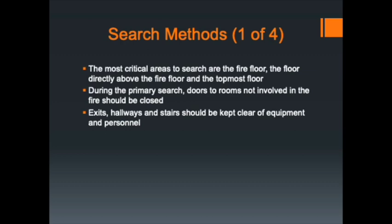Be concerned about auto exposure if working on the floor above the fire. Auto exposure is when fire on the second floor extends out a window, travels up the side of the building, and re-enters through a third floor window. If you're on the top floor, understand that smoke and heated gases are going to build up there even if the fire is on a lower floor. Make sure you have your SCBA and positive air supply when working in these areas.